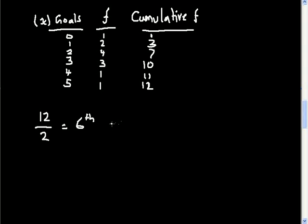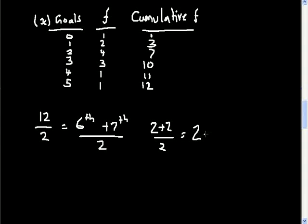Since we got a whole number, we look at the sixth and seventh positions. The first entry is zero, the second and third are one, and the fourth through seventh are two. So both the sixth and seventh values are two — two plus two divided by two gives a median of two goals.